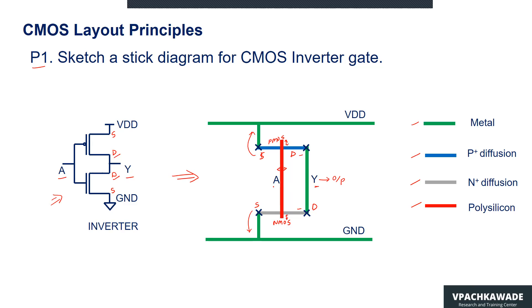A indicates the polysilicon input of the circuit. This is how we complete the layout for the CMOS inverter gate.